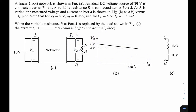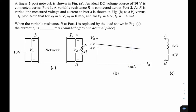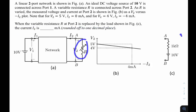From the graph: V2 equals 5 volts at I2 equal to 0, and another point where I2 is minus 4 and V2 is 4. When the variable resistor R at port 2 is replaced by the load shown in figure c, what is the current I2? That is what we need to find.